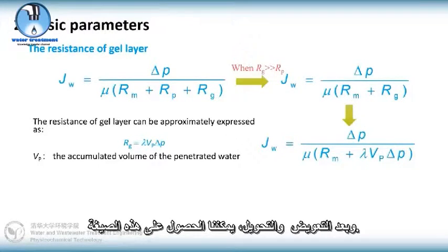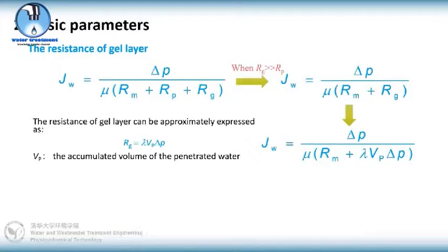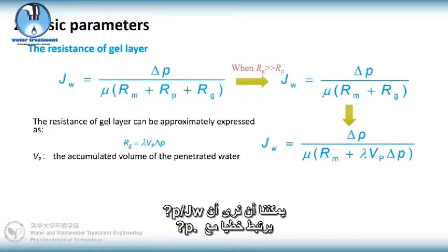Suppose the resistance of gel layer is proportional to the accumulated volume of filtrate and the pressure. And after substitution and transformation, we can get this formula. We can see that dP over dW is linearly correlated with dP.